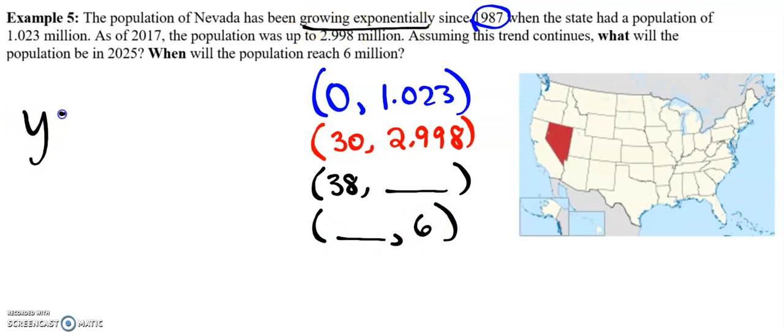So go ahead and set up. We're talking about exponential growth. Keep in mind that populations don't always follow the same pattern forever. That's the whole idea about this flattening the curve with COVID, is that exponential growth usually is the start of a logistic curve, and then it'll eventually smooth out. But for right now, we're going to go with this information. So go ahead and pause your video. See if you can tell me what's going on in 2025 and when will the population reach 6 million.